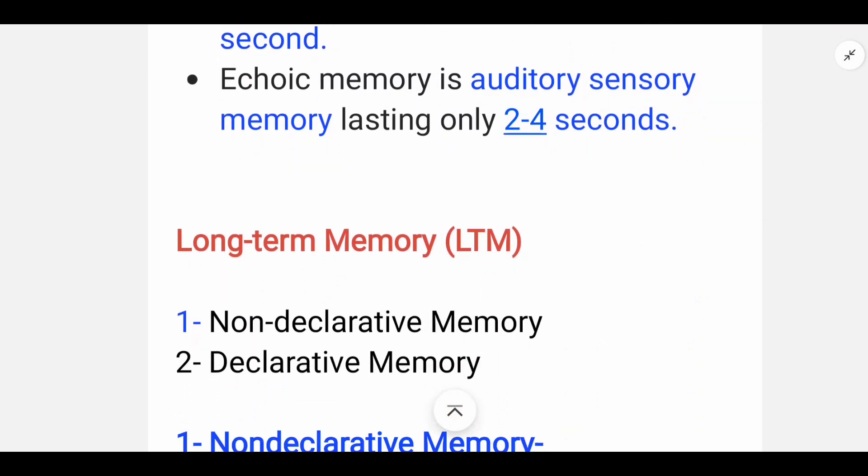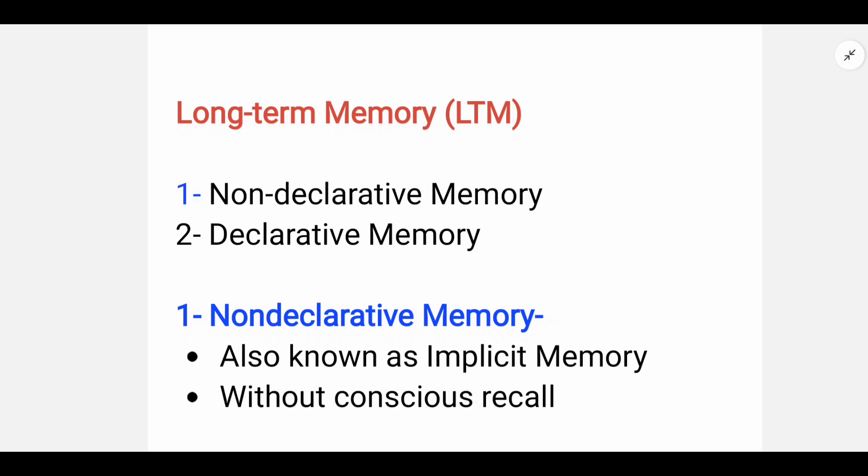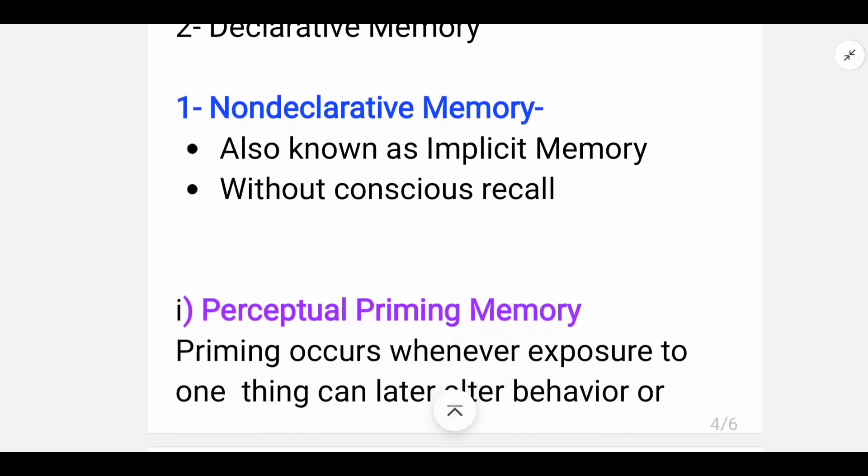Long-term memory has two types. First is non-declarative memory and second is declarative memory. Non-declarative memory is also known as implicit memory. This memory is without conscious recall. It means we don't have to be consciously aware of this memory. It's secret memory, so these things are non-declarative memory.